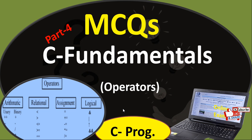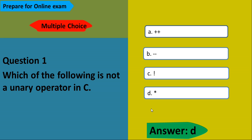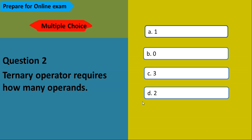Question number one: Which of the following is not a unary operator in C? The options are increment (++), decrement (--), not operator (!), and modulus operator (%). The answer is B — modulus. Increment, decrement, and not are all unary operators.